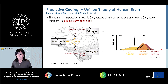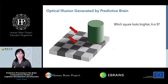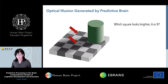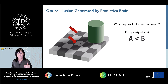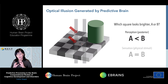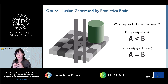Before going to the robotics experiments, I'd like to give a short example to demonstrate that your brain also works as a predictive machine. Maybe you already know this famous illusion. The question is: which region, A or B, looks brighter? Many of you would say that region B looks a little bit brighter than region A, because region B corresponds to the white area on the checkerboard. But if you focus only on the sensory signal without any prediction, you may recognize that regions A and B actually have exactly the same luminance.